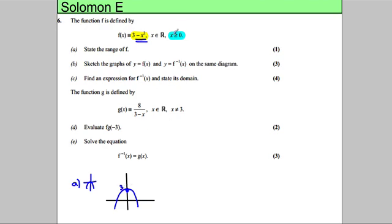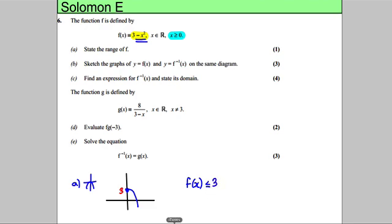Also notice that x has to be bigger than or equal to 0, so really I should rub out all of this here — that's how the graph would look. Now, what's the range of that graph? That graph can take any value from 3 or less than 3. So we're going to say that f(x) is less than or equal to 3. And that's our range. Drawing the graph was really helpful for us to do that.